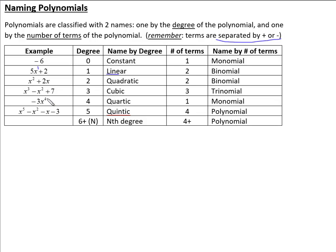Our next example we've got x to the fourth, so it's a fourth degree, which is called quartic — think about quarters. Quartic is degree four, and there's only one term, so it's a monomial. Our next one is degree five, which is quintic — like quintuplets, that means five. This happened to have four terms. Anytime we have four or more terms, we go to the generic name polynomial. Poly just means many — like polygons from geometry, which means many sided. This is many terms.